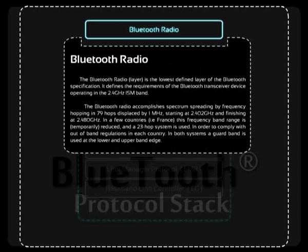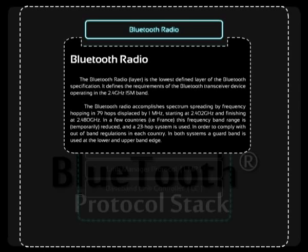Finally we find the Bluetooth radio layer. This is the lowest defined layer of the Bluetooth specification. It defines the requirements of the Bluetooth transceiver device operating in the 2.4 GHz ISM band. The Bluetooth radio accomplishes spectrum spreading by frequency hopping in 79 hops displaced by 1 MHz, starting at 2.402 GHz and finishing at 2.480 GHz. In a few countries, for example France, this frequency band range is temporarily reduced and a 23-hop system is used in order to comply with out-of-band regulations. In both systems, a guard band is used at the lower and upper band edge.